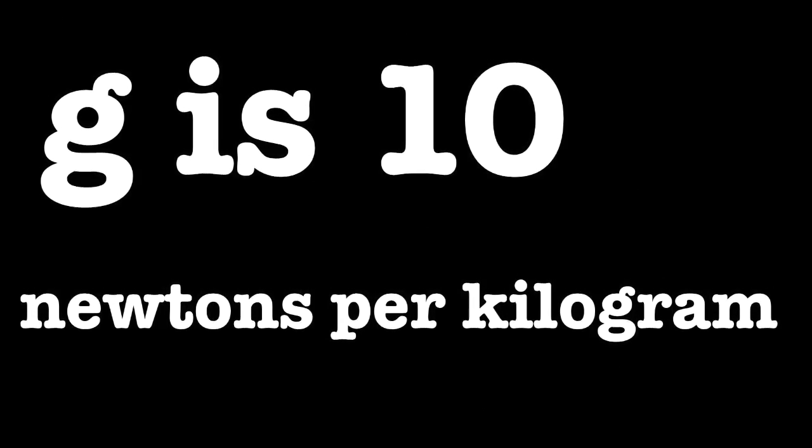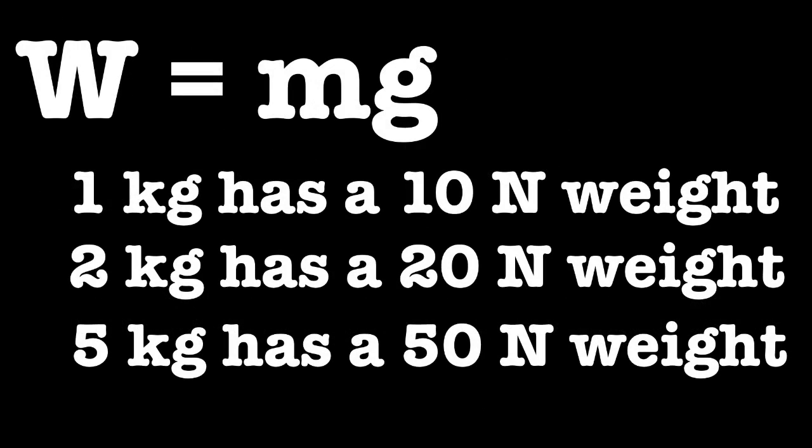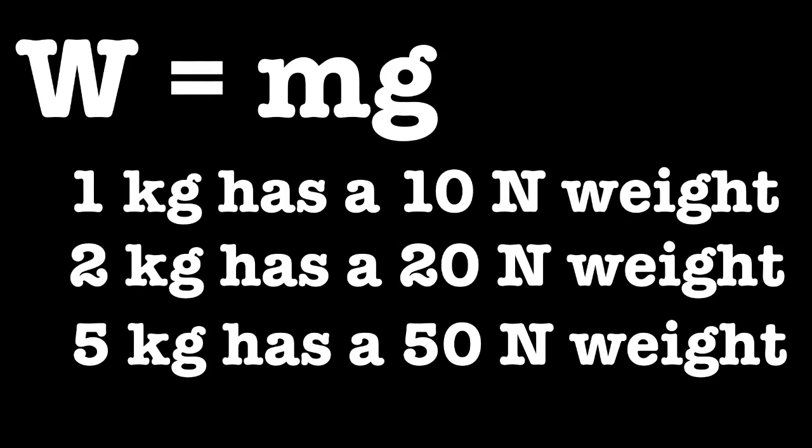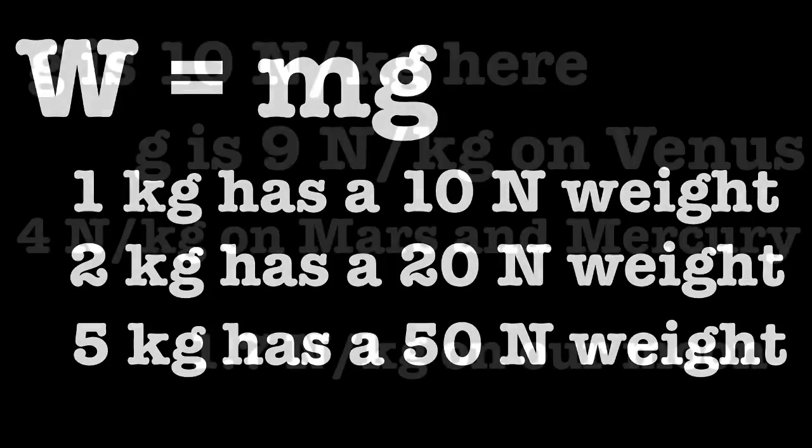10 newtons of weight for every kilogram of mass. So using w equals mg here at Earth's surface, 1 kilogram of mass is a 10 newton weight, 2 kilograms is a 20 newton weight, 5 kilograms is a 50 newton weight. Just multiply by 10 because g is 10.